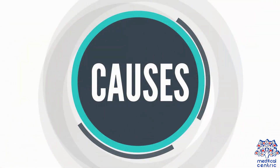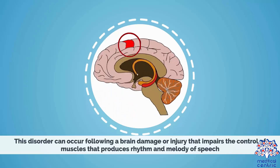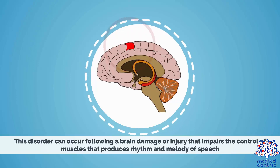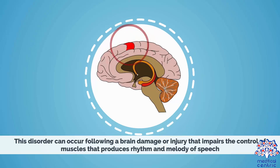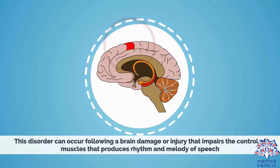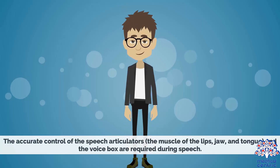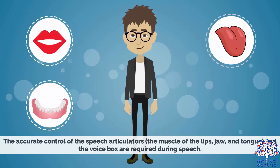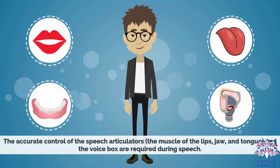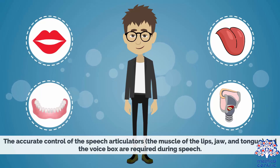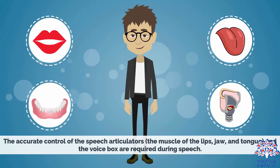This disorder can occur following brain damage or injury that impairs the control of muscles that produce the rhythm and melody of speech. The accurate control of the speech articulators — the muscles of the lips, jaw, and tongue — and the voice box are required during speech.